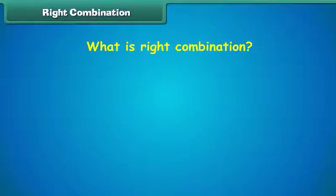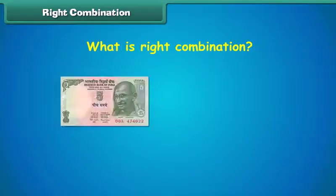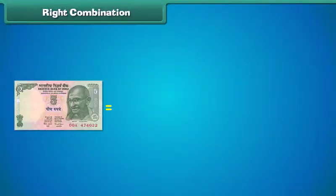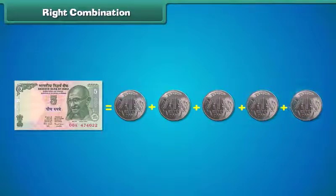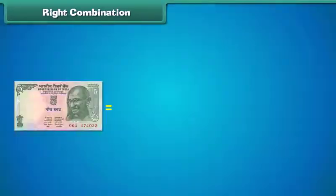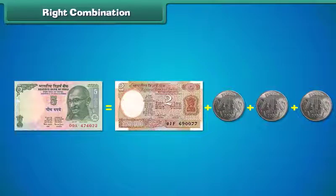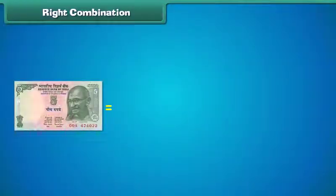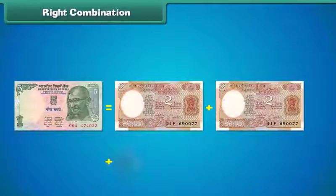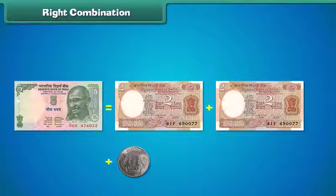Let us learn about some right combinations of notes and coins. 1 five-rupee note is equal to the sum of 5 one-rupee coins. It is also equal to the sum of 1 two-rupee note and 3 one-rupee coins. Similarly, 1 five-rupee note is equal to the sum of a 2-rupee note and a 1-rupee coin. All these are the right combinations.